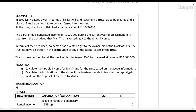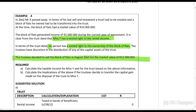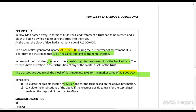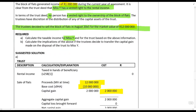Example 3 changes things a little. In 20X2, Mr. X passed away; a trust was created; the block of flats transferred at a market value of 10 million rands. Income of a million rands was generated. Ms. Y has a vested right to rental income, but no person has a vested right to the ownership — trustees have discretion. The trustees decided to sell it for 12 million rands. Ms. Y will be taxed on the million rands rental income. On the sale, proceeds are 12 million, base cost 10 million — the trust will be taxed on that 2 million rand capital gain.